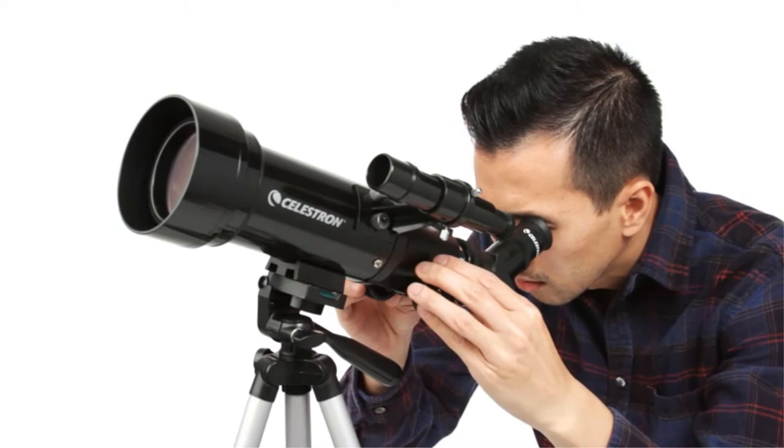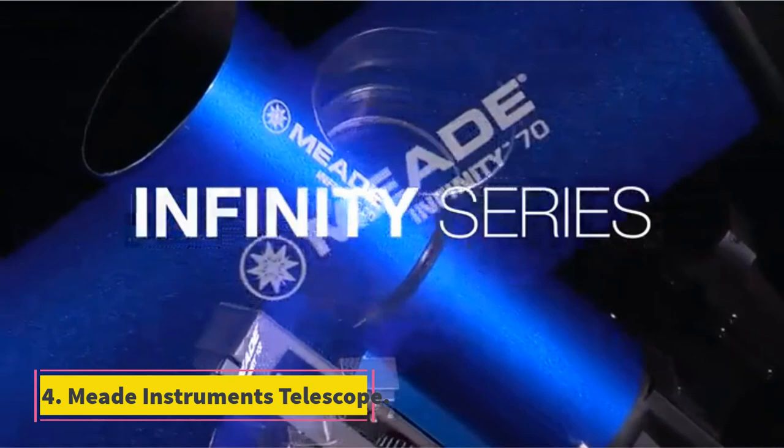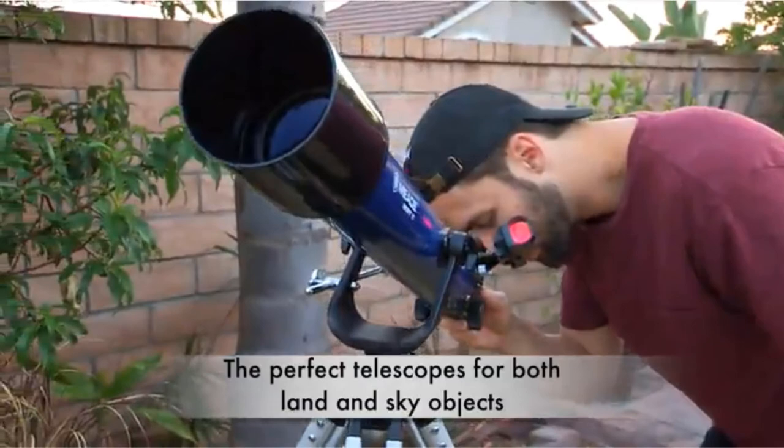At number four: Meade Instruments Telescope. The main advantage of this telescope is the aperture of 70mm. Moreover, with a focal length of 700mm, you can be sure that you will be able to see objects which are far away with complete clarity as well.